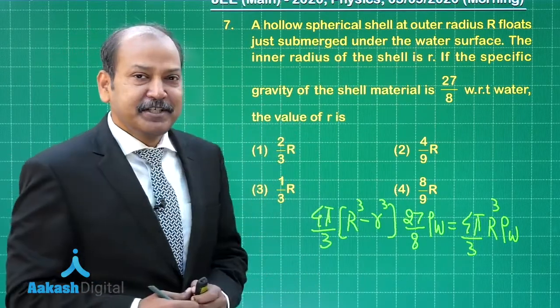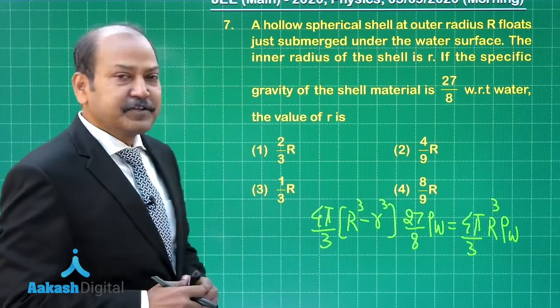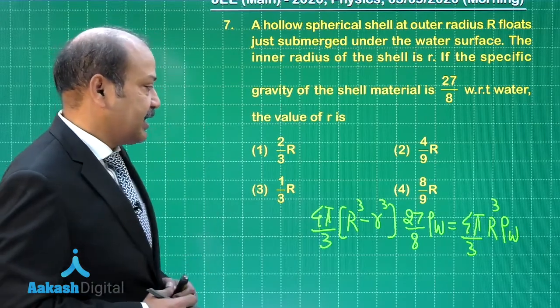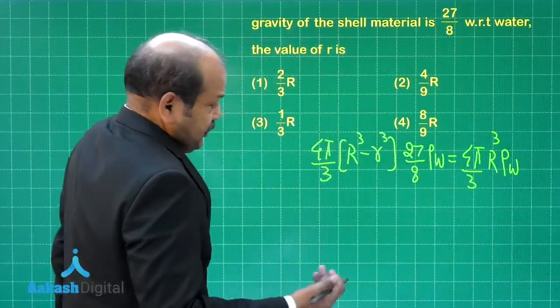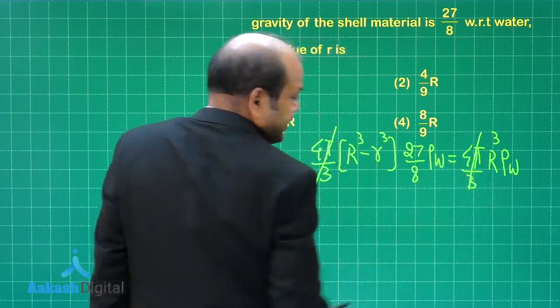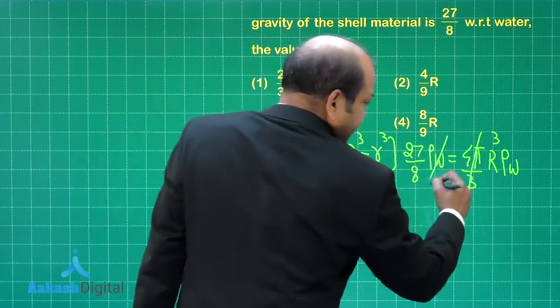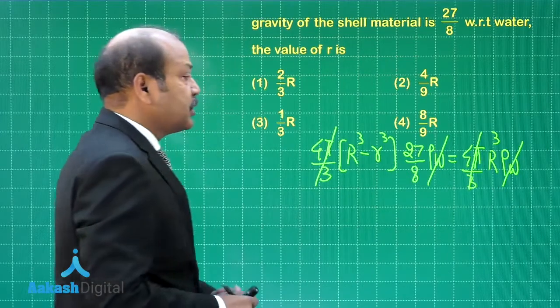Solving this equation will give us the value of small r in terms of capital R. We can strike off 4π by 3 on both sides and of course, we can strike off ρw also on both sides.